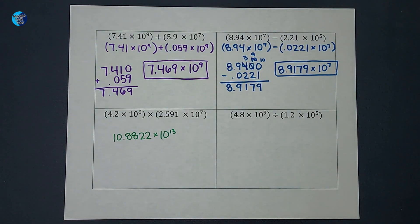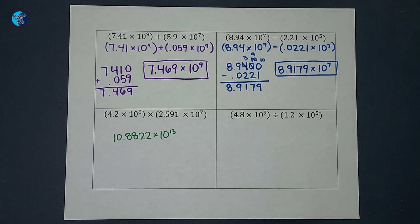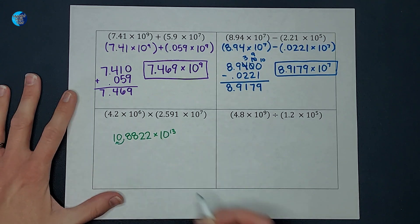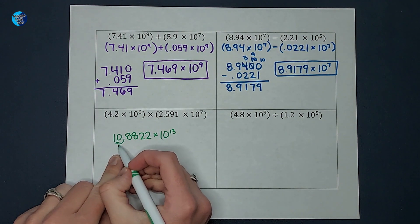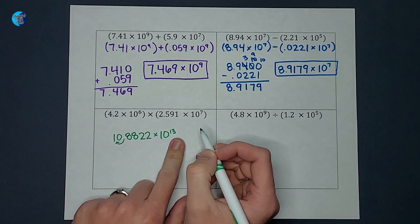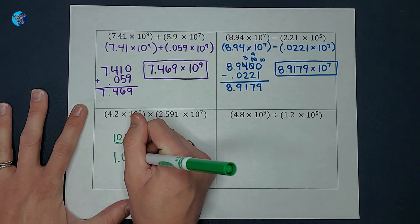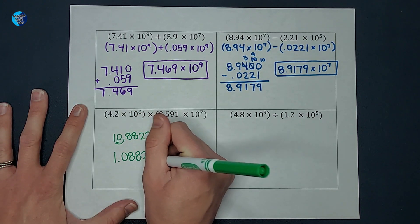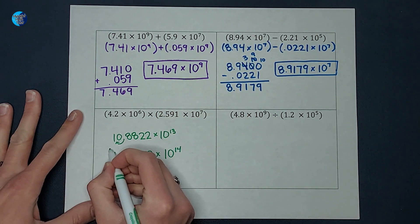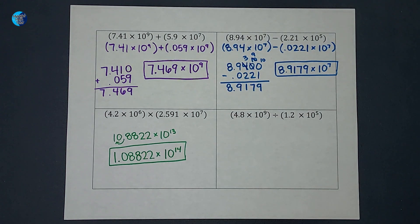Remember, there needs to be only one number in front of the decimal for proper scientific notation. So I move the decimal to the left one place, which means to get back to my number I'd move it one extra time, changing 13 to 14. The final answer is 1.08822 times 10 to the fourteenth power — a very large number I'm glad I didn't have to multiply without scientific notation.